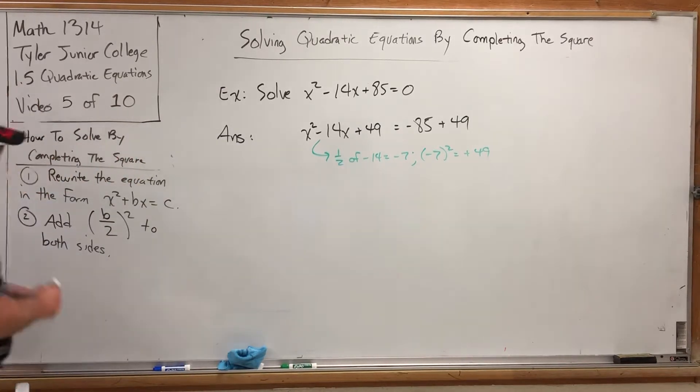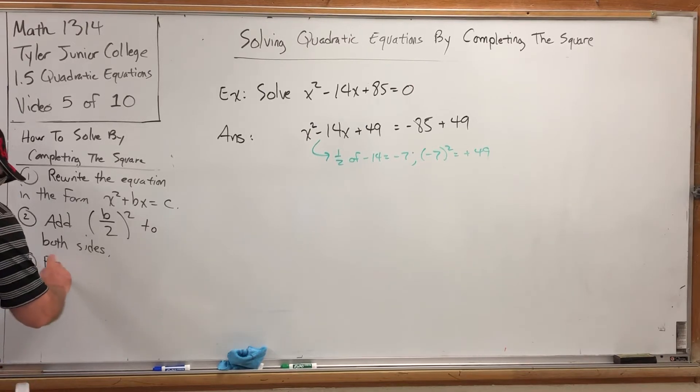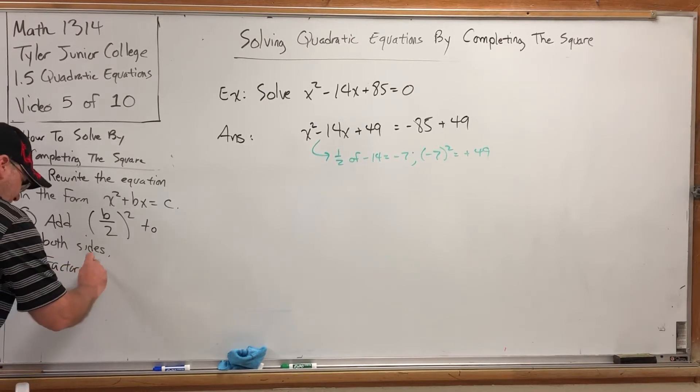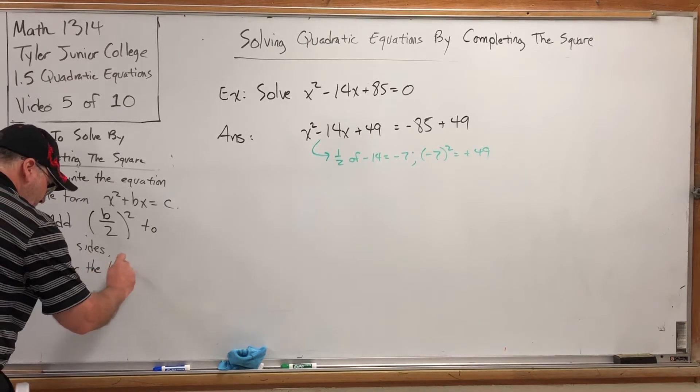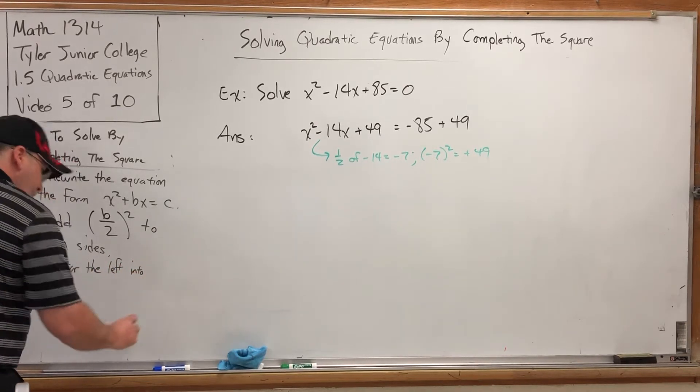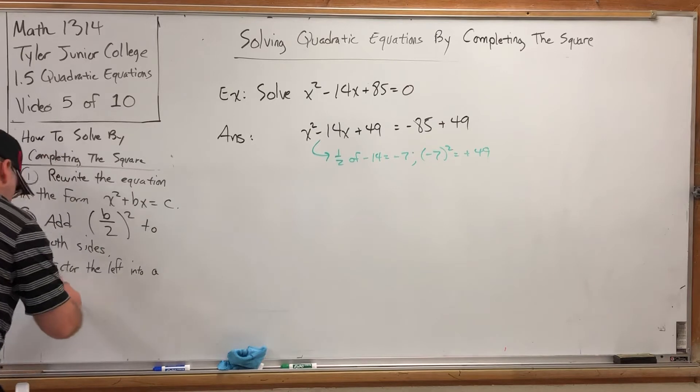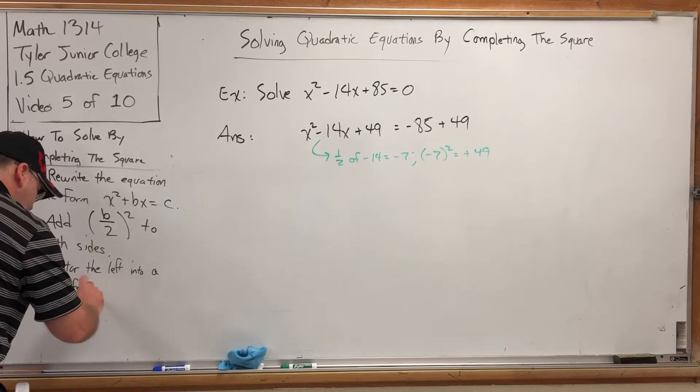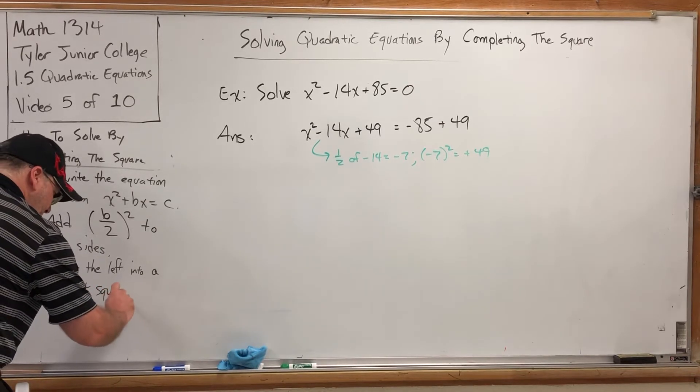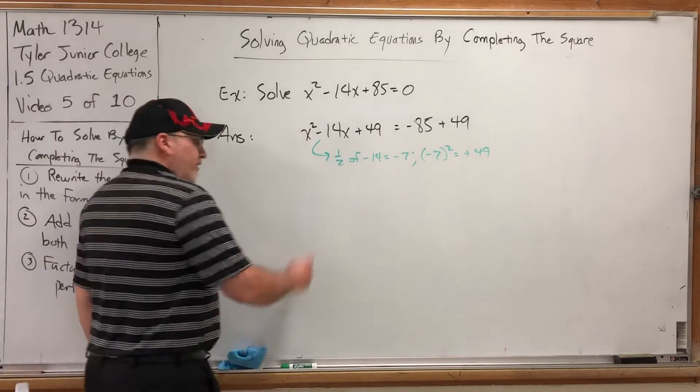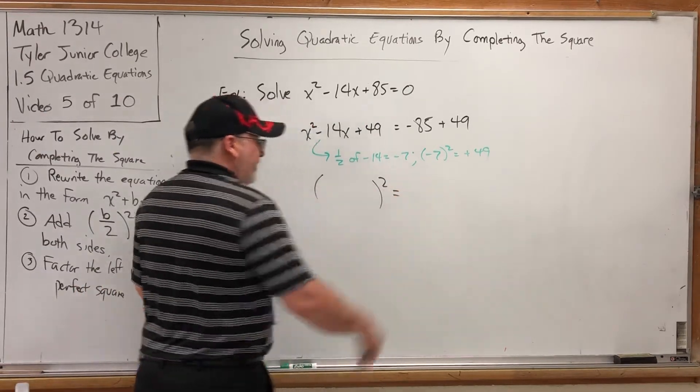You get to factor. Factor the left into a perfect square. And it should happen by design. The left side will not only factor, it will factor into something squared. Now, here's the great thing about it. You don't have to guess what it is.